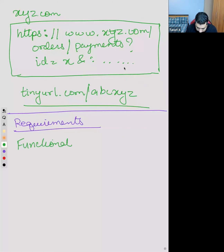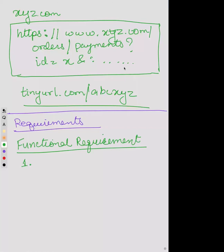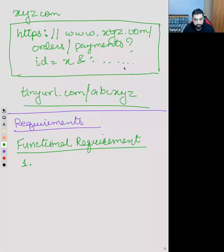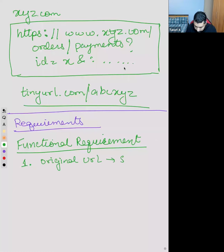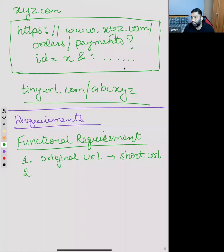The first requirement would be: given an original URL, you would convert it into a short URL. The second would be to allow custom URLs - they can basically choose to name their URL. You can support aliases or custom URLs where the part after the domain can be taken as input. Suppose you're using six or seven characters - you can take that as an input itself.